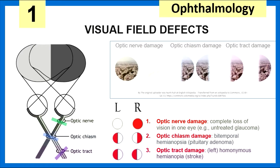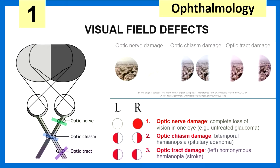We begin with visual field defects. The three we want to keep in mind are: optic nerve damage, where the patient can't see out of the affected eye; optic chiasm damage, where the patient has bitemporal hemianopsia, which can be caused by a pituitary adenoma squashing the optic chiasm; and optic tract damage, causing homonymous hemianopsia — inability to see out of one half of the visual field on the same side in both eyes, which can be seen in an MCA stroke.